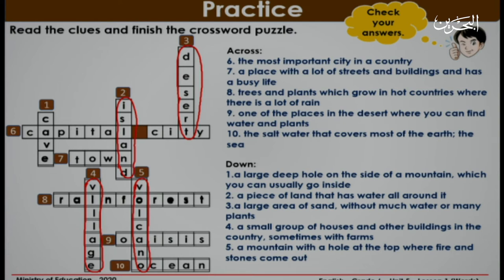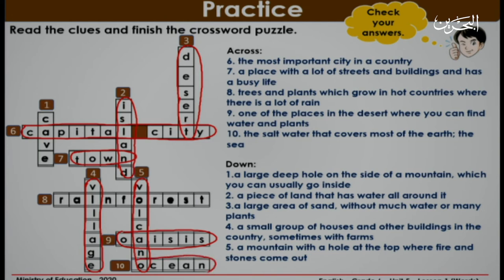Now let's go to across. Number six: the most important city in a country. The answer is capital city. Excellent. Number seven: a place with a lot of streets and buildings and has a busy life. The answer is town. Good job. Number eight is done for you. Number nine: one of the places in the desert where you can find water and plants. The answer is oasis. Excellent. And finally, number ten: the salt water that covers most of the earth — the sea. The answer is ocean. Good job.